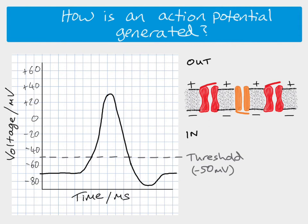This will continue at resting potential until there's another stimulus to cause depolarization. That is how an action potential is generated — it's all to do with these voltage-gated channels, when they open and when they close, and the direction that sodium and potassium ions move.